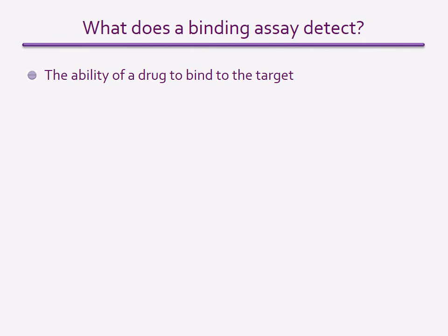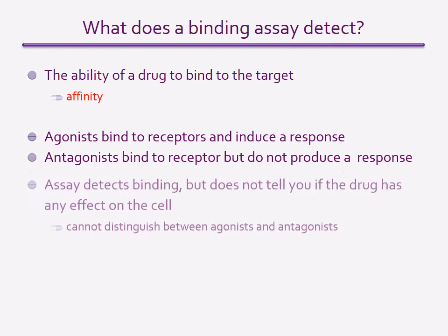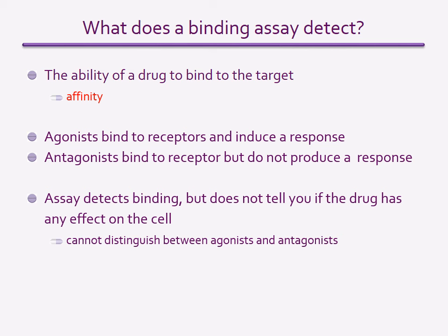It is important to understand that radio ligand binding assays can only measure the binding of ligands to a target. They cannot tell what kind of functional effect the ligand has — for example, whether it is an agonist or an antagonist — only how tightly it binds to the target. In competition assays, the potency at displacing the radio ligand is measured, but this is not a measure of inhibitory or antagonist potency. As in the cannabinoid example, the competing ligand could have any effect — agonist, antagonist, or no effect on the target protein — and there is no way to tell from these experiments.